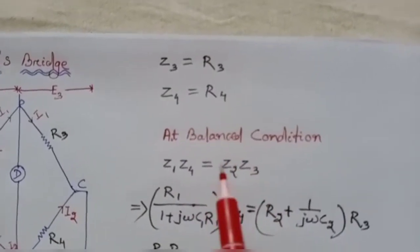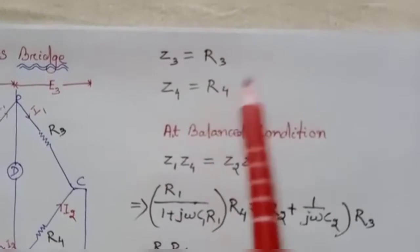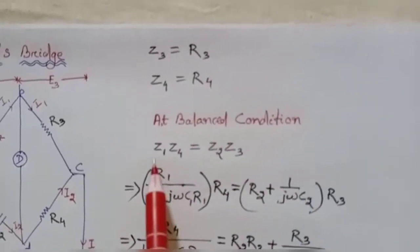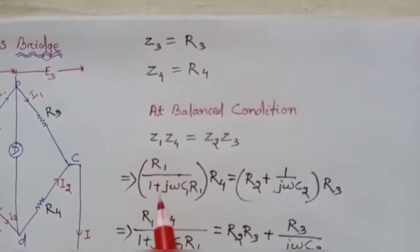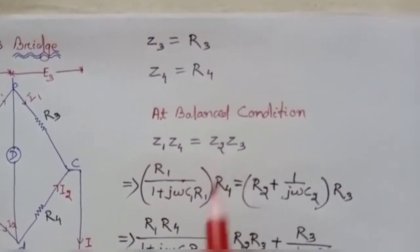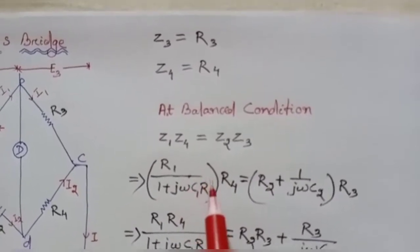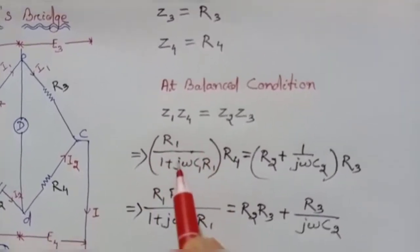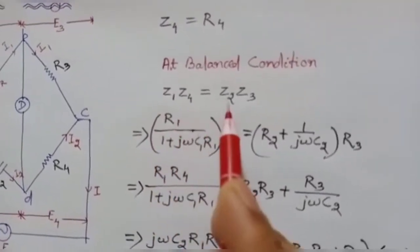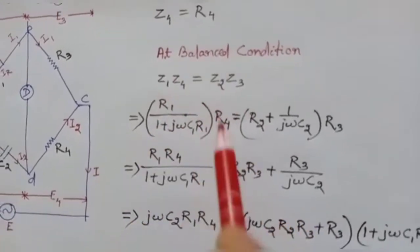Next we put these equations into the balance condition. The balance condition equation is Z1·Z4 = Z2·Z3. We now substitute all the values of Z1, Z4, Z2, and Z3 into this equation and solve.